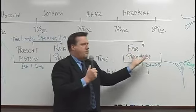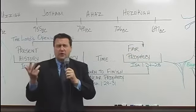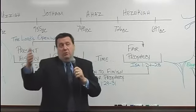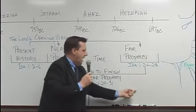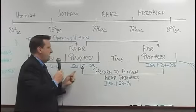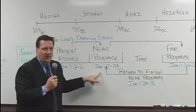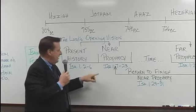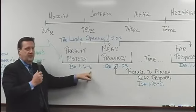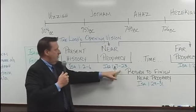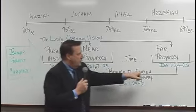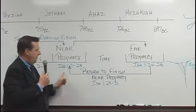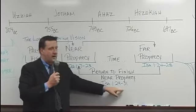That far prophecy may be only one or two verses long, which is going to happen in today's lesson, or it may be almost a chapter long. Then he will return back to finish the near prophecy. Today's lesson is a perfect example: verses 2 through 6 is the present history, verses 7 through 23 is the near prophecy, verses 24 to 28 is the far prophecy, only to return to finish the near prophecy in verses 29 through 31.